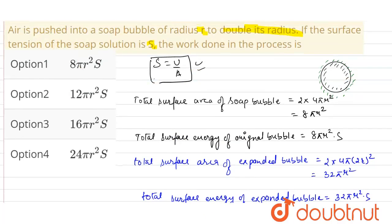So the total work done will be 24πr²s. Choosing from the options, option number four — 24πr²s — is the correct answer.